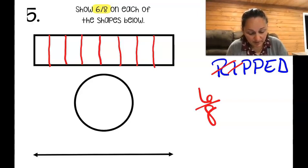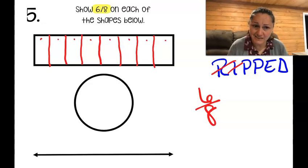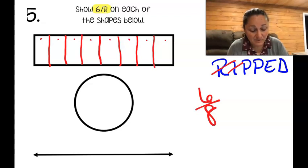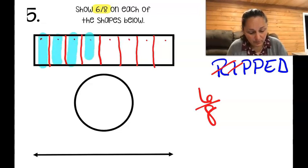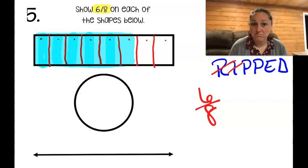Let's count and make sure we have eight pieces: one, two, three, four, five, six, seven, eight. Eight pieces, seven cuts. How many am I going to shade? Six. So let's shade six: one, two, three, four, five, and six. I've shaded six of them — looks good.